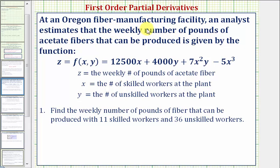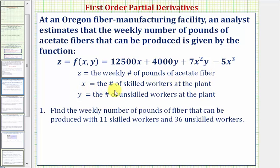At an Oregon fiber manufacturing facility, an analyst estimates that the weekly number of pounds of acetate fibers that can be produced is given by the function z equals f of x, y. Where z equals the weekly number of pounds of acetate fiber, x equals the number of skilled workers at the plant, and y equals the number of unskilled workers at the plant.